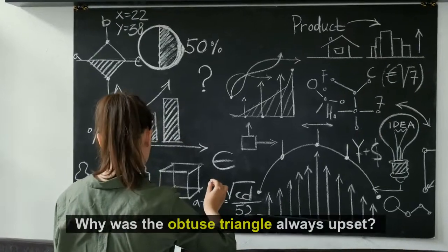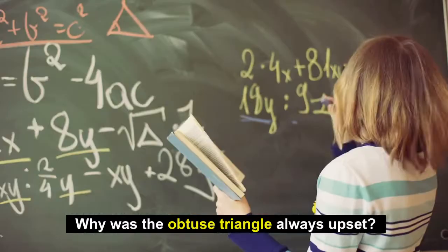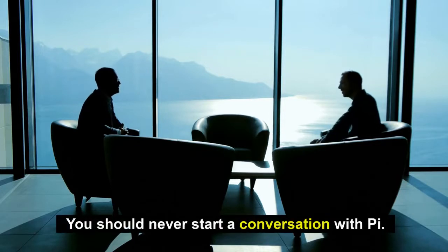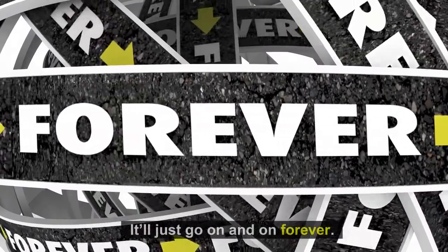Why was the obtuse triangle always upset? Because it's never right. You should never start a conversation with Pi. It'll just go on and on forever.